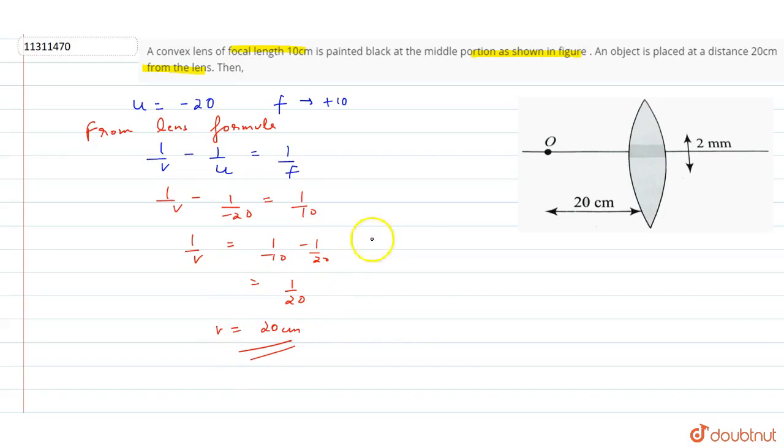The image is formed at 20 cm. This means U equals V, which is the same distance from the lens. This is because the object is at 2F. When the object is at 2F, we can directly apply this principle.